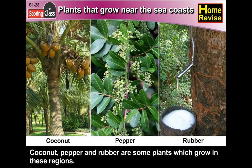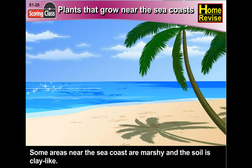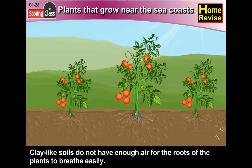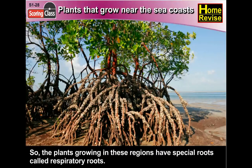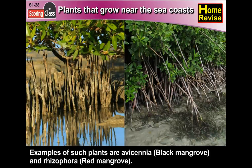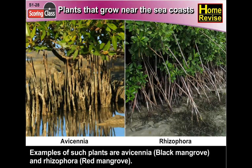Plants that grow near sea coasts: coconut, pepper, and rubber are some plants which grow in these regions. Some areas near the sea coast are marshy and the soil is clay-like. Clay-like soils do not have enough air for the roots of the plants to breathe easily. So the plants growing in these regions have special roots called respiratory roots. Examples of such plants are Avicennia (black mangrove) and Rhizophora (red mangrove).